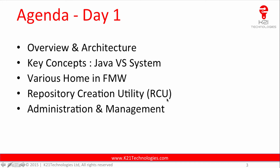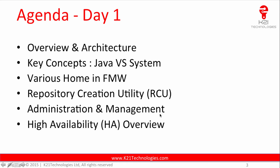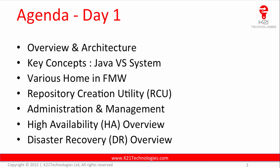We'll then cover administration and management tools for Oracle Fusion Middleware, followed by a high availability overview. High availability is mainly about eliminating single points of failure — you have an active-active cluster so that if one node goes down, another node takes over, providing a highly available solution, which is a key requirement in enterprise deployments.